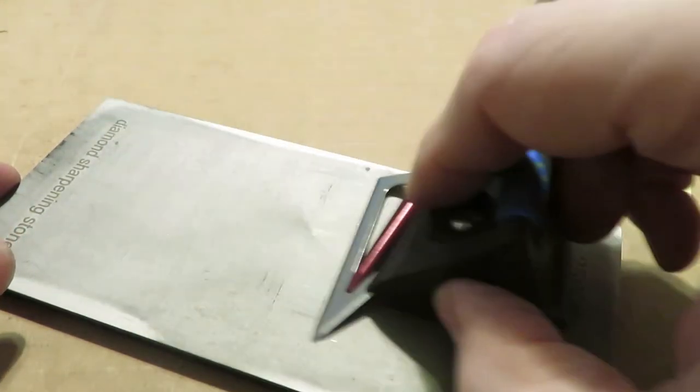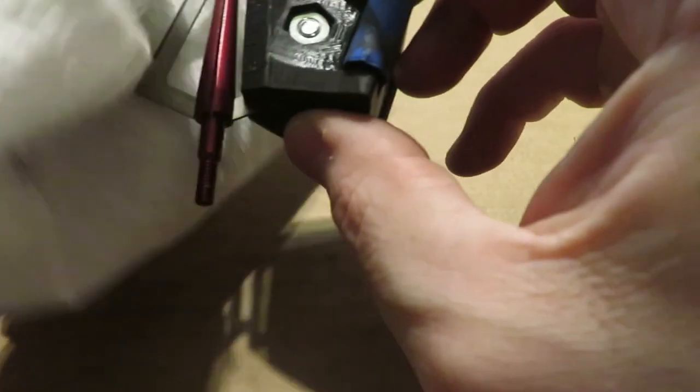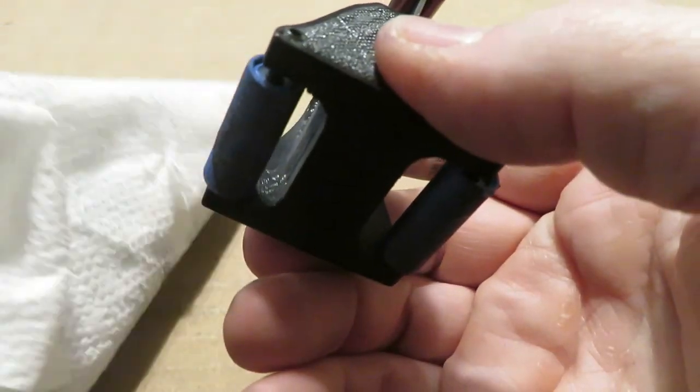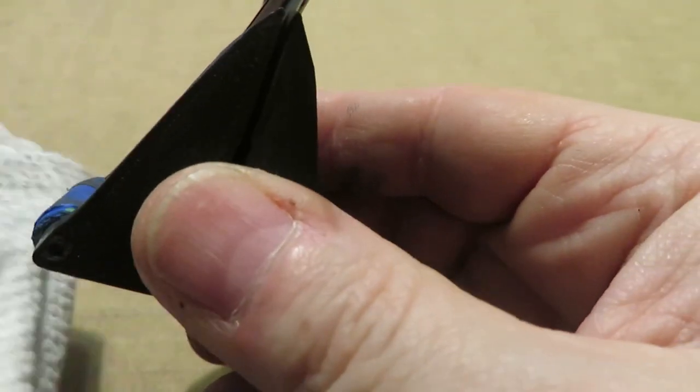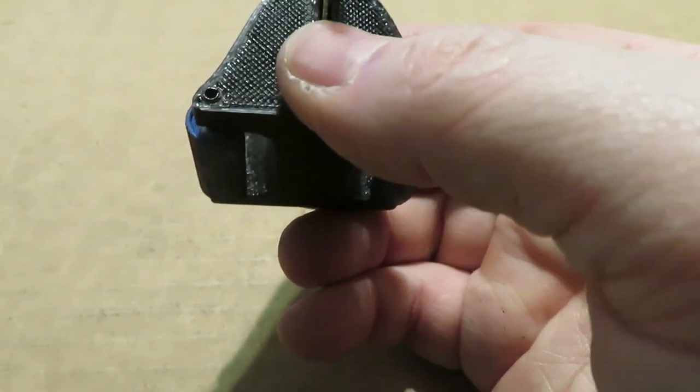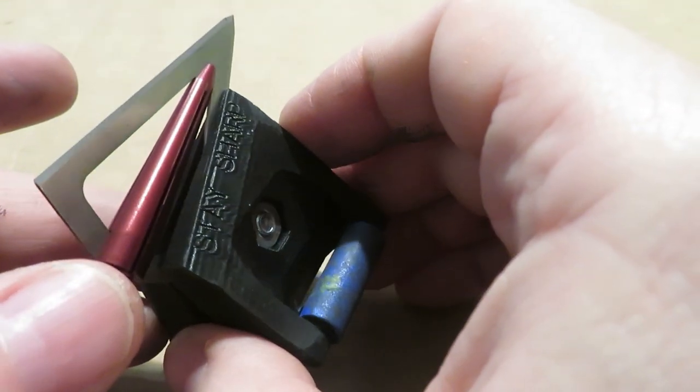This alternating method is cheap insurance to make sure we have no burr left before we go on to the next step, which is going to be stropping with buffing compound. Before we do that we want to clean off any 2500 grit debris from the guide and the broadhead. We don't want to transfer that to the buffing compound surface. Buffing compound is what we're going to talk about next.